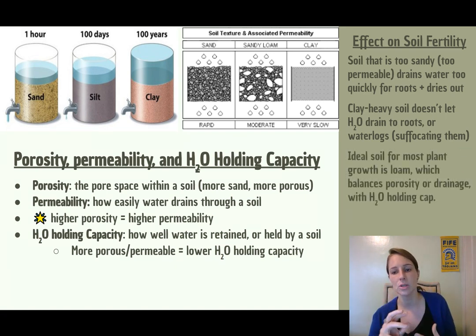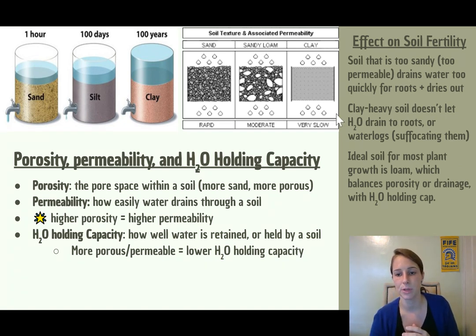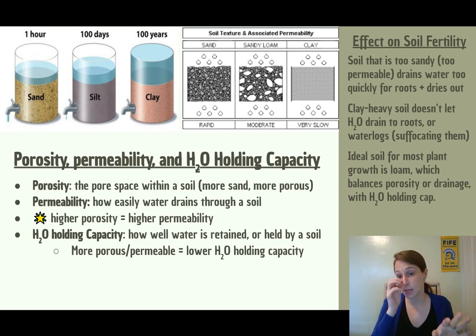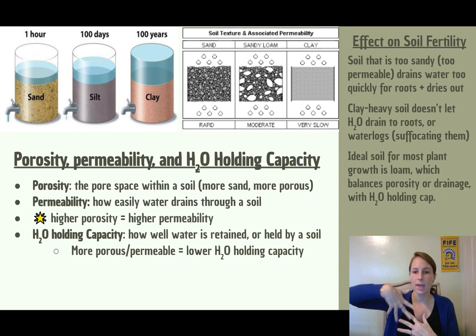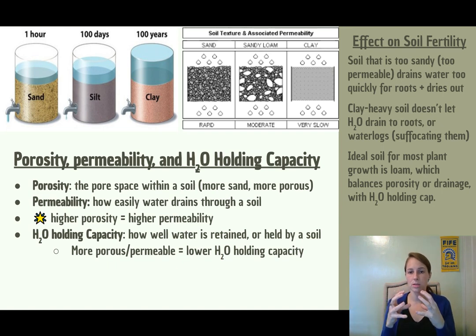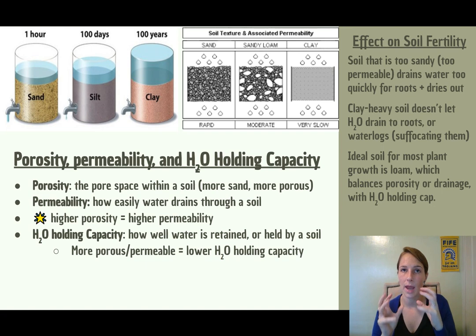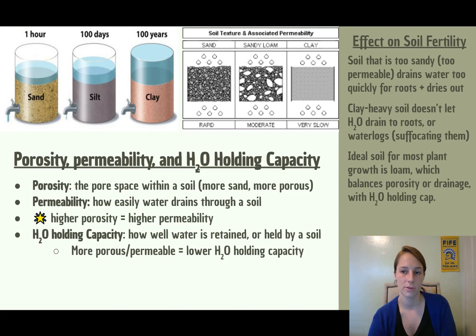The most ideal soil is loam, which is a balance — roughly 40% sand, 40% silt, 20% clay. You have enough pores that water can get in and be held, but it will also slowly drain out so that plants can access that water without becoming waterlogged. That's why loam is the ideal for soil fertility.